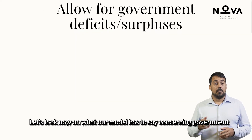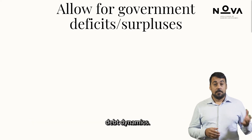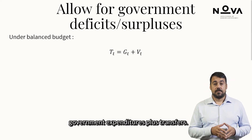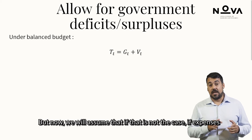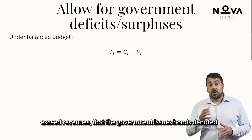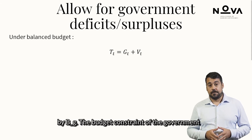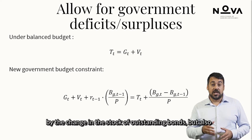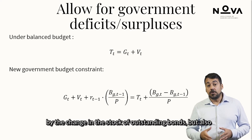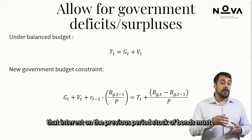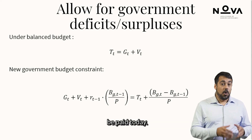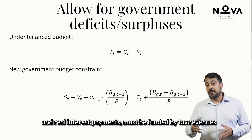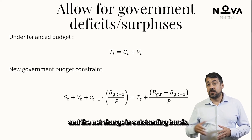Let's look at what our model has to say concerning government debt dynamics. Before, under a balanced budget, government revenue had to equate government expenditures plus transfers. But now we will assume that if expenses exceed revenues, the government issues bonds, denoted by B_G. The budget constraint of the government now reflects that funds are made available by the change in the stock of outstanding bonds, but also that interest on the previous period's stock of bonds must be paid today. Real purchases plus real transfers and real interest payments must be funded by tax revenues and the net change in outstanding bonds.